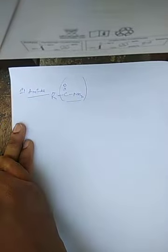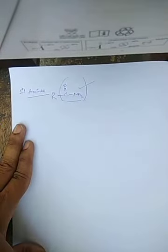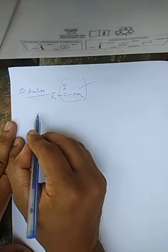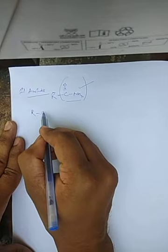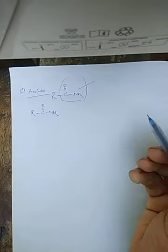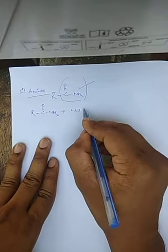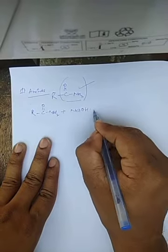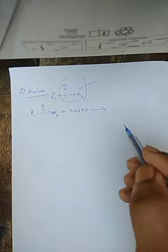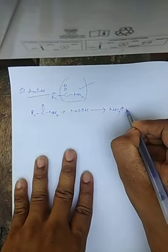To identify whether the unknown compound has such a functional group, suppose this is your amide. If you add sodium hydroxide to this solution, then what will happen — it will release ammonia gas.